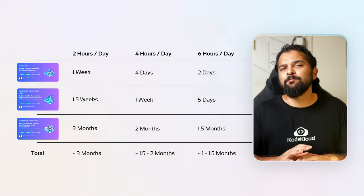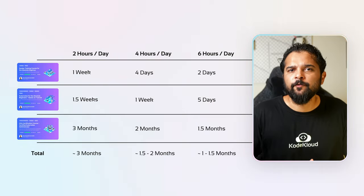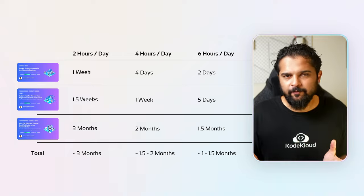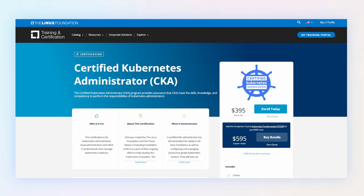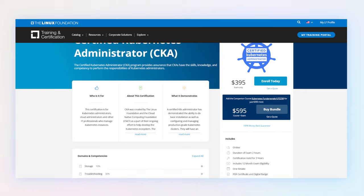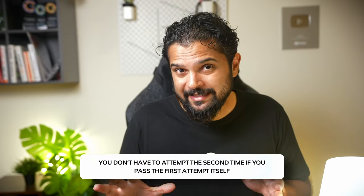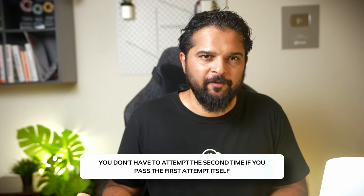Of course, this varies depending on how fast you pick things up, so the chart is just a high-level overview. Once you're ready, register for the exam on the CNCF website. As of today, it costs $395 and you get two attempts. If you fail the first one, you can attempt it a second time.